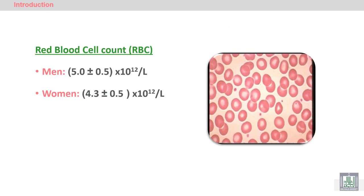The red blood cell count is different in males and females because of sex hormones. In males, androgenic hormones such as testosterone stimulate the bone marrow to produce more red blood cells. The normal range of red blood cells in males is 5 million, while in females it is 4.3 million plus or minus 0.5 million per microliter.